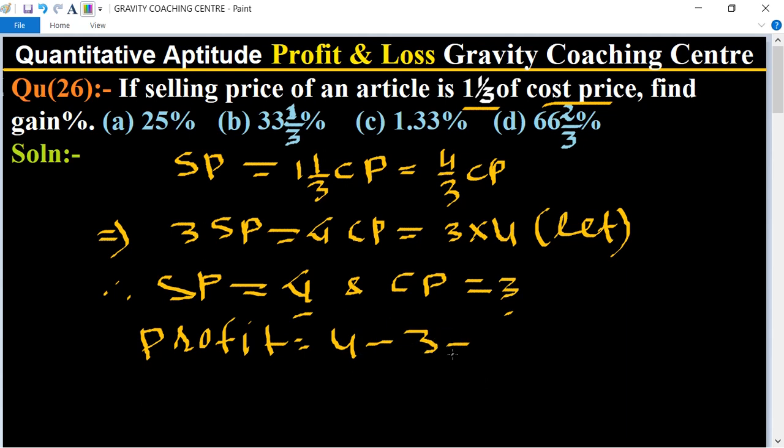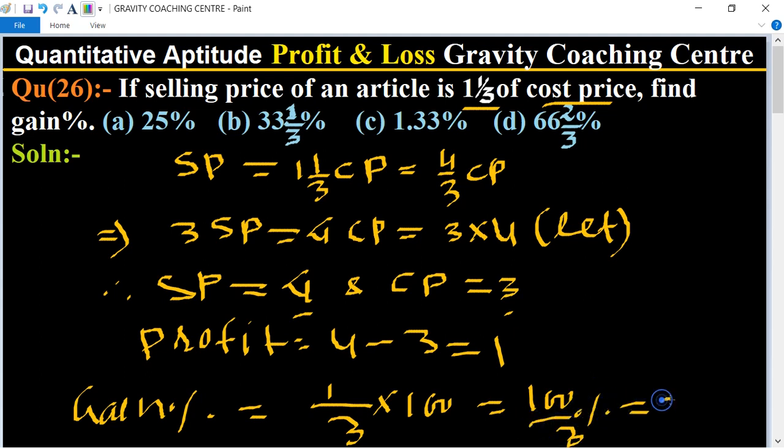So profit or gain percent, equal to its formula is profit upon CP into 100. So 1 upon 3 into 100 equal to 100 by 3 percent, means 33 whole number 1 upon 3 percent, which is the answer.